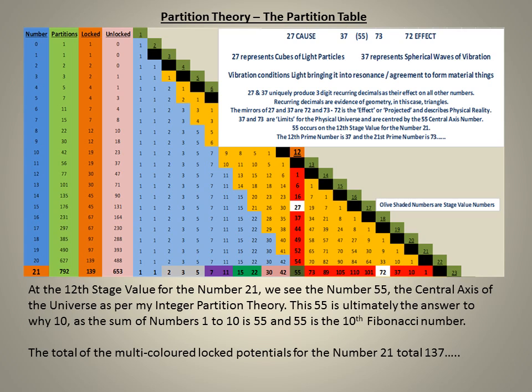The total of the multicolored locked potentials for the number 21, immediately preceding the 55, also total 137.